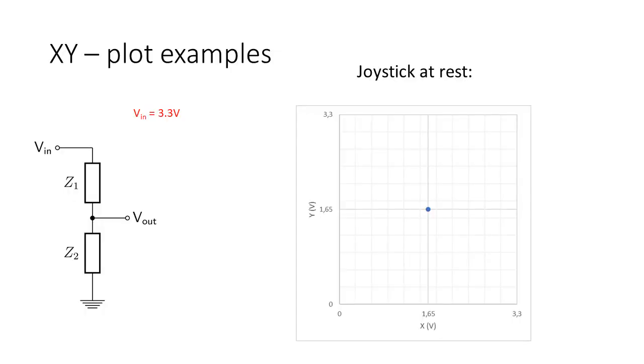I made some examples of XY plots so it's visual how the two potentiometers work together in determining the movement of the joystick. In this plot the joystick is at rest. This means that both potentiometers have the exact same value of half the input voltage. In this case the input voltage is 3.3V.